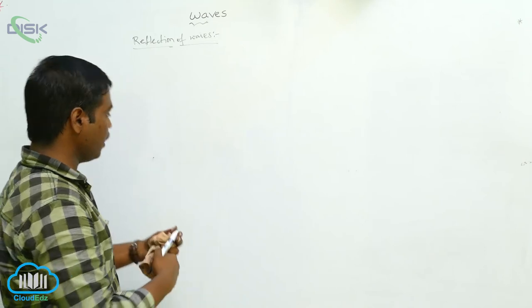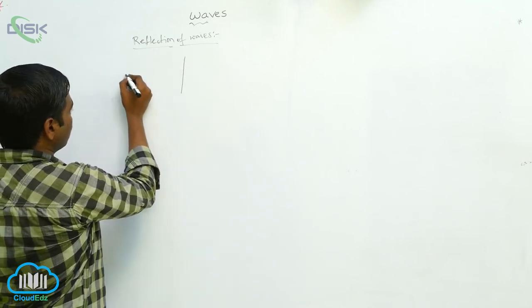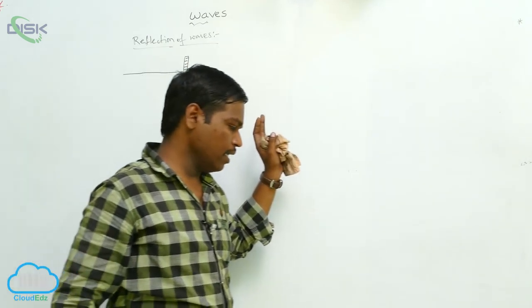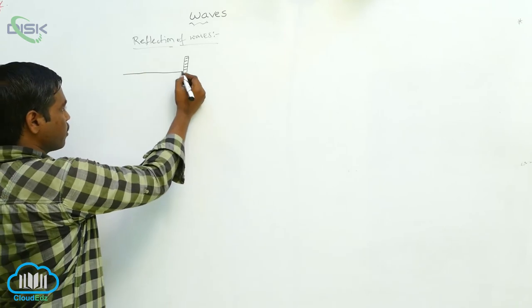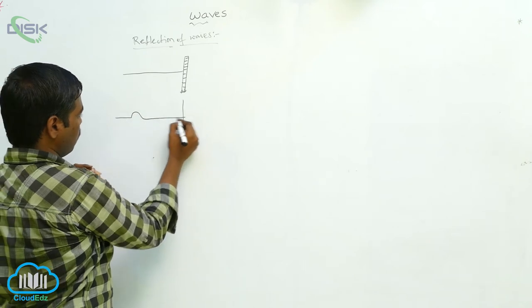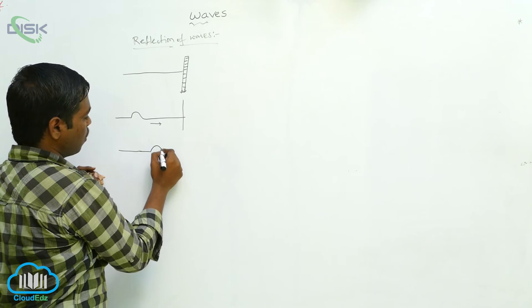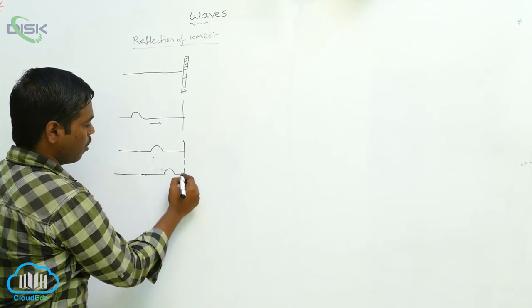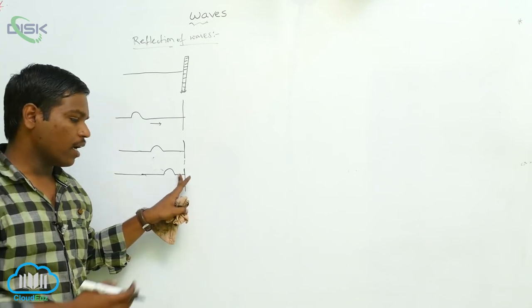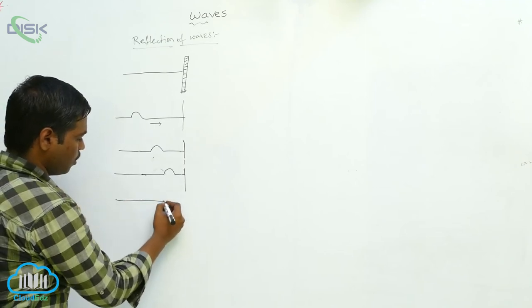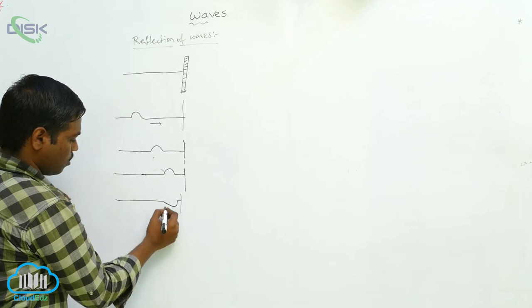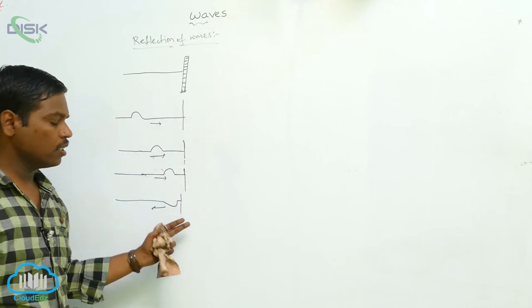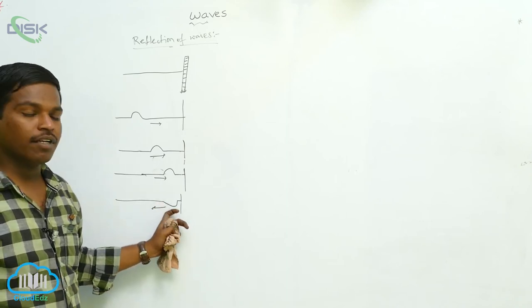Here I am taking a rope or string tied to a support at one end. When a disturbance is caused in the string, a pulse travels along one direction. After reaching that end, the pulse comes back in the opposite direction. This returning pulse is called a reflected wave.